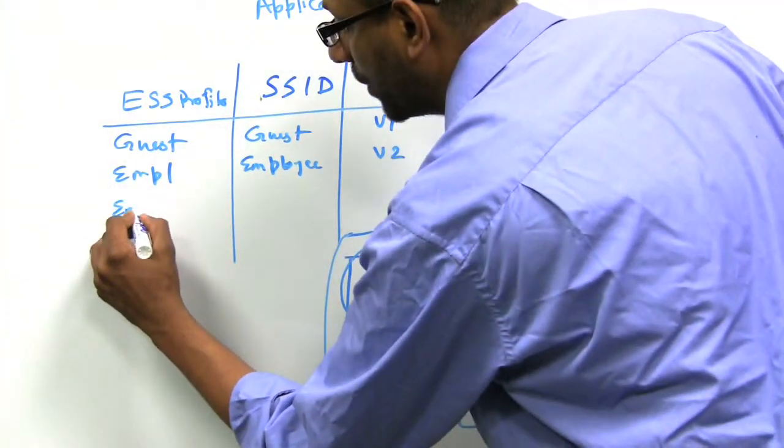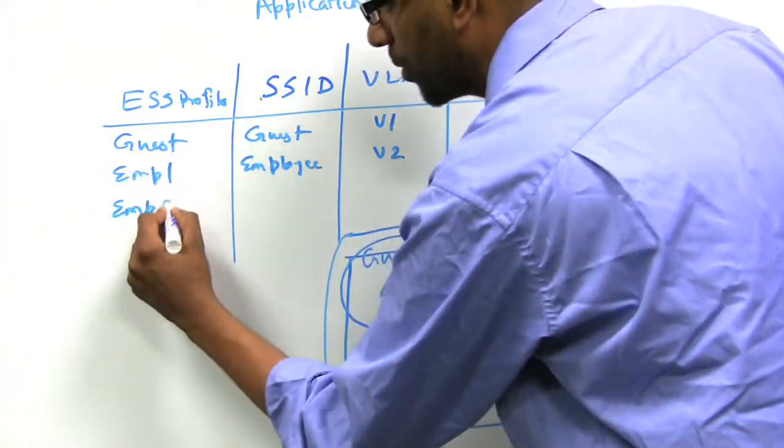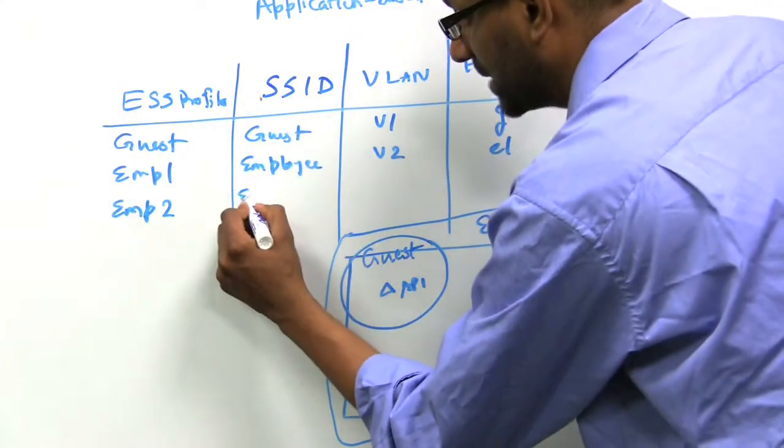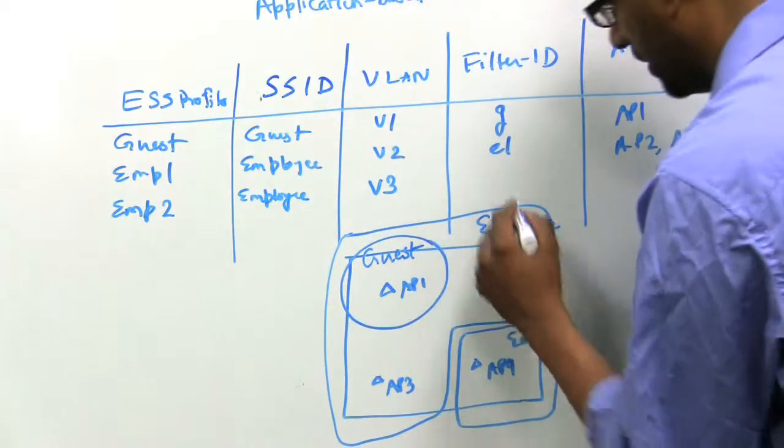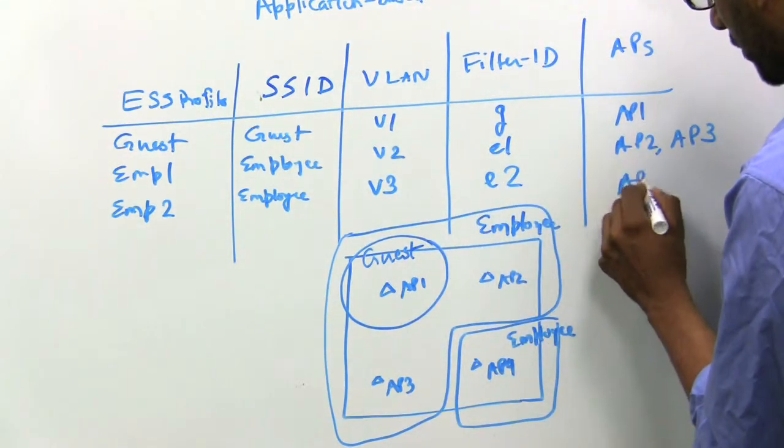And then you have a third one where you have a different ESS profile, but the same advertised SSID. Call this V3 and you say E2 and this goes on AP4.